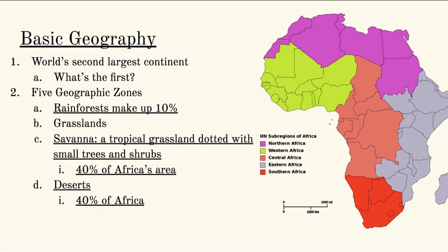If you think about it, that means 80% of Africa is basically tropical grassland or desert, which doesn't leave a lot of area left over. The deserts are 40% of Africa, and the world's largest desert, the Sahara, is located in Africa. You looked at that on your map activity with the camels and trade routes going through the Sahara desert. It's incredibly difficult to cross even today with modern technology — it really isn't safe because it is incredibly deadly.